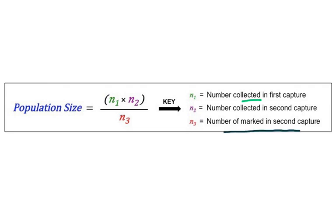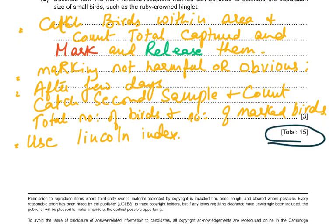For example, if you caught 100 the first time, marked them and released them, then after a week collected 150 birds of which 50 were marked, those must have been the ones caught the first time. That is how you use this formula to get an estimate of the population size. That completes question number 2, which was worth 15 marks, and that is the end of this paper. I hope it has been helpful — please leave any comments and thank you very much.